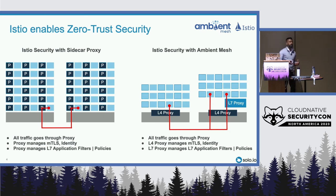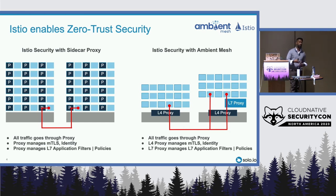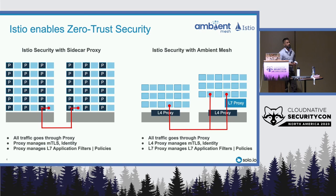The reality is that not all applications are going to require the sidecar. But when you need some sort of layer seven style of policy, this is where the waypoint proxy comes into effect — to come in and act on that policy whenever there is one that arises. We'll talk more about how that all flows.